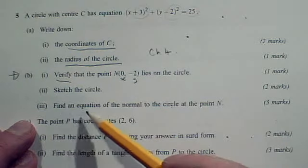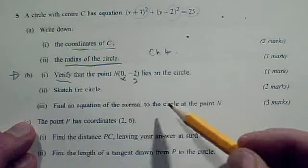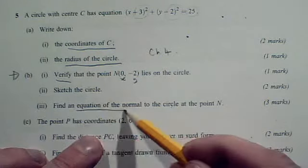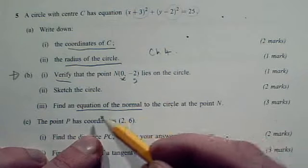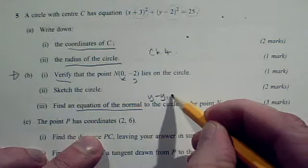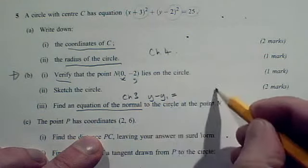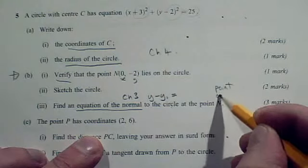And then in part e3 we've got to find an equation of the normal to the circle at the point N. So an equation of a normal is an equation of a line. You're going to be using the y minus y1 recipe that you did from chapter 3. For that you need a point and a gradient.